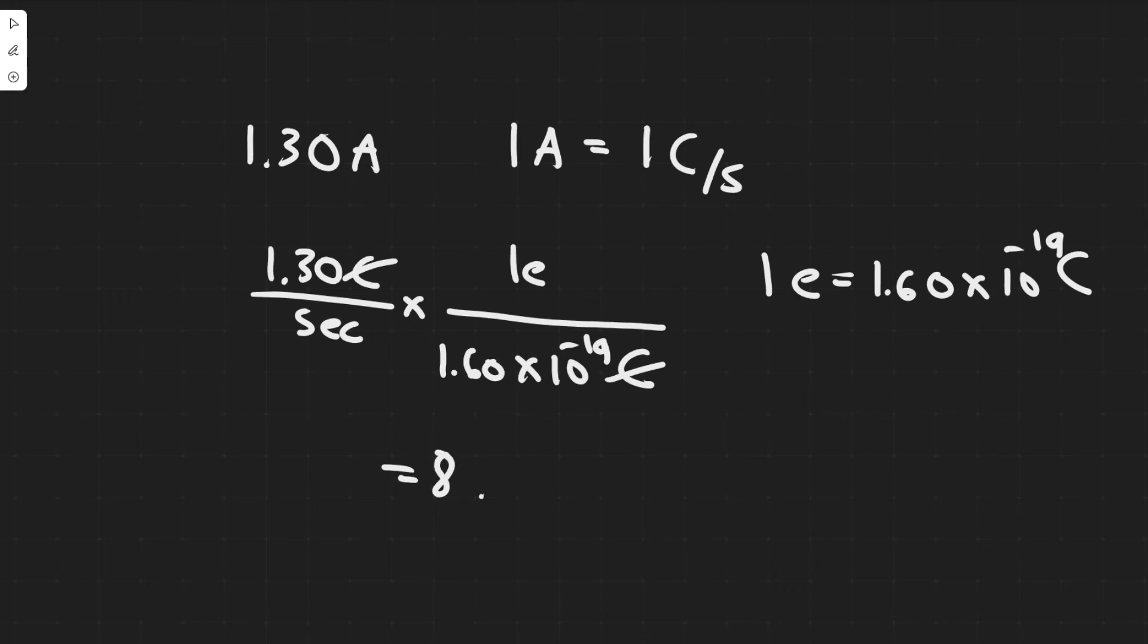You're going to get 8.125 times 10 to the 18, and it's going to be electrons per second.